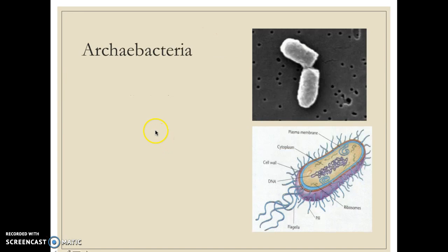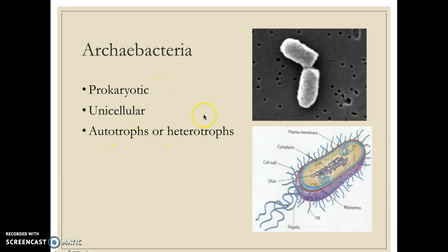Now, archaebacteria — we're going to start going over the six different kingdoms and categorize them by characteristics. Archaebacteria is one of the kingdoms of bacteria. They are prokaryotes, meaning they do not have a nucleus. They're mostly unicellular and can be either autotrophs or heterotrophs. Some are photosynthetic while others are not. For the most part, they are motile and have flagella or cilia, which allows them to move around their environment.